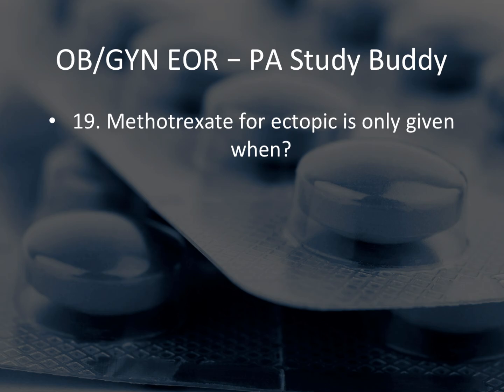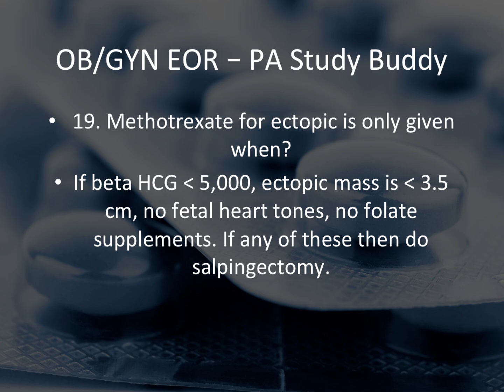Question 19: Methotrexate for ectopic is only given when — beta-hCG is less than 5,000, ectopic mass is less than 3.5 cm, there's no fetal heart tone, and no folate supplements. If beta-hCG is 6,000 or mass is 4 cm, you don't use methotrexate — you do a salpingectomy. If any of those criteria are exceeded, salpingectomy is the answer.